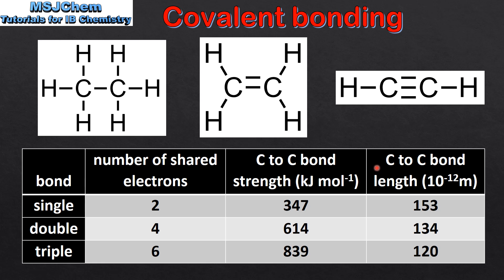Next we look at carbon to carbon bond length. As we go from a single to a double to a triple bond, we can see that the bond length is decreasing. So from this we can see that single covalent bonds are the weakest and the longest, and triple covalent bonds are the strongest and the shortest.